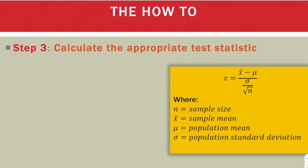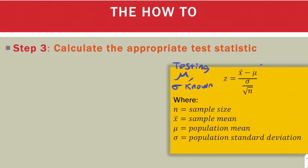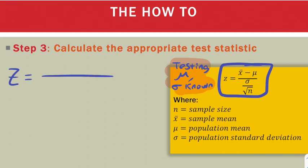Step three is to calculate the appropriate test statistic. This test statistic right here is for when we're testing the mean with the sigma known. The test statistic will change based on what kind of problem you're doing. Now we need to start filling this out.